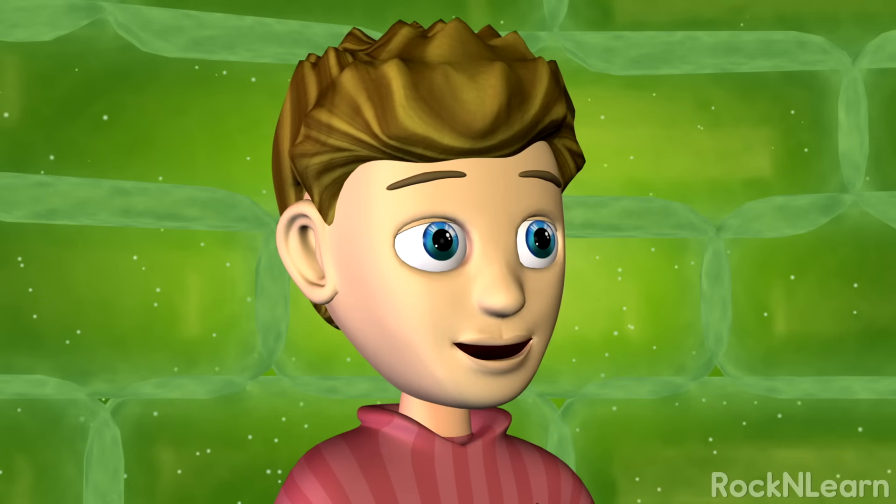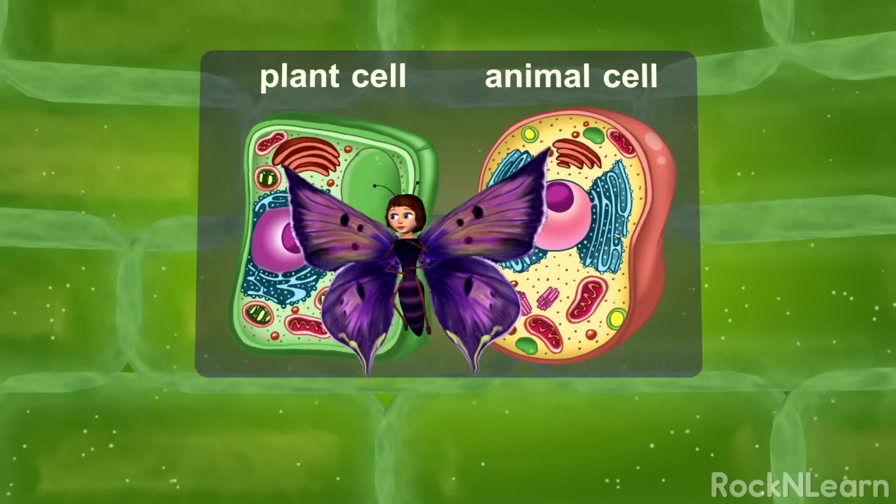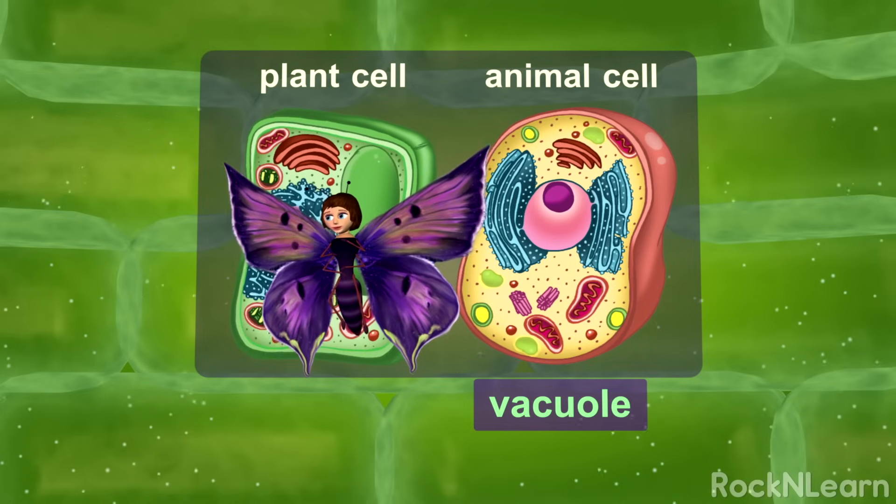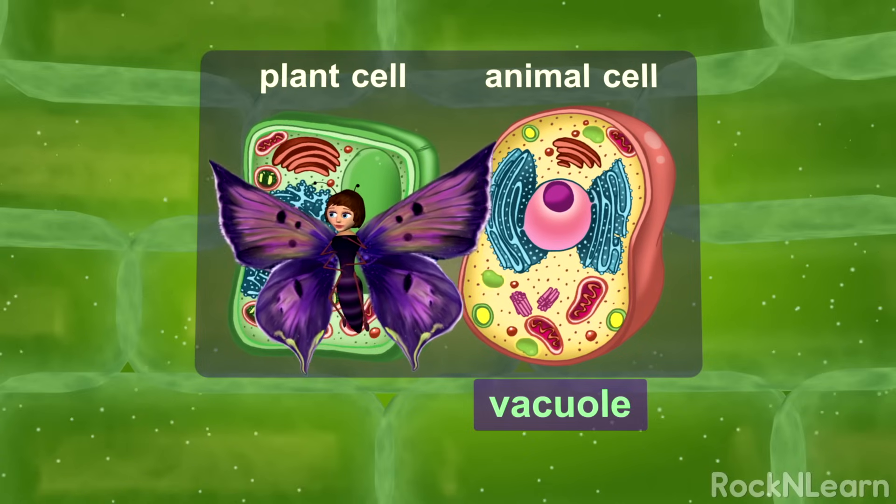Do animal cells have vacuoles? Yes, but they only have very small ones. Their only roles are to digest things in the cell and get rid of cell waste.